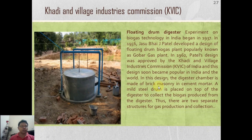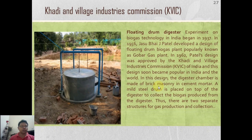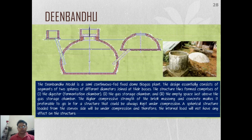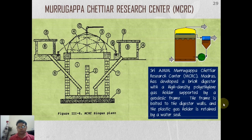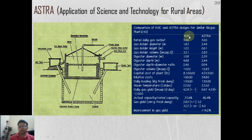A comparison between KBIC design and ASTRA (Application of Science and Technology for Rural Areas) designs can be reviewed. The plant has five sections: first is the mixing tank above ground level, second is the inlet tank, third is the outlet tank, fourth is the overflow tank, and fifth includes various tested feedstocks with their tested values.